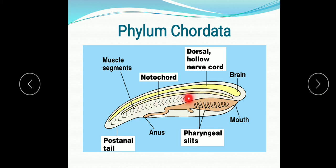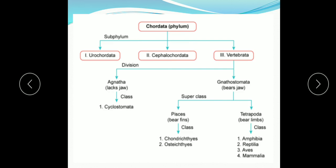This notochord further develops into the vertebral column in the vertebrates. Then pharyngeal gill slits in the pharynx region — these gill slits are present, and post-anal tail. Those are the characteristic features of Chordata.